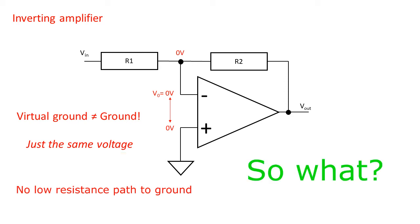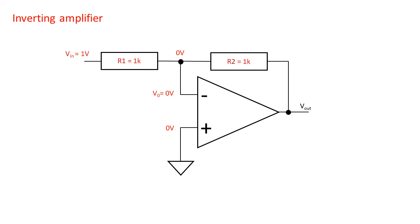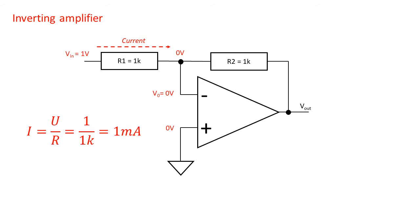Now why is the virtual ground so magical? I'll be trying to give a more visual analogy. Let's see the circuit from the point of view of the current flow from the source. Let's say that there is a voltage of one volt at the input of the amplifier. At the other side of the resistor there is a lower voltage because it's the virtual ground which is equal to zero volts. The condition is met for current to flow. In this case one volt over one kilohm equals one milliamp of current. So the current happily travels towards the virtual ground.